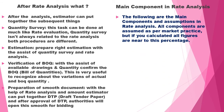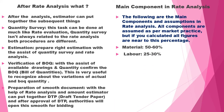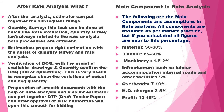The main components of rate analysis are: Material — 50 to 60 percent; Labor — 25 to 30 percent; Machinery — 1.5 to 2 percent; Infrastructure such as labor accommodation, internal roads and other facilities — 5 percent; Overhead — 7 to 10 percent; HO charges — 3 to 5 percent; Profit — 10 to 15 percent.